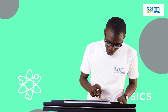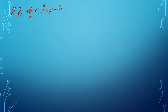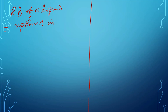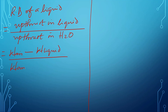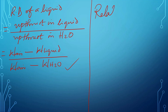The relative density of a liquid is given as: up thrust in liquid over up thrust in water. Up thrust in liquid equals weight in air minus weight in liquid, and up thrust in water equals weight in air minus weight in water. Relative density has no units, and it can be measured using an instrument called the relative density bottle, or density bottle.